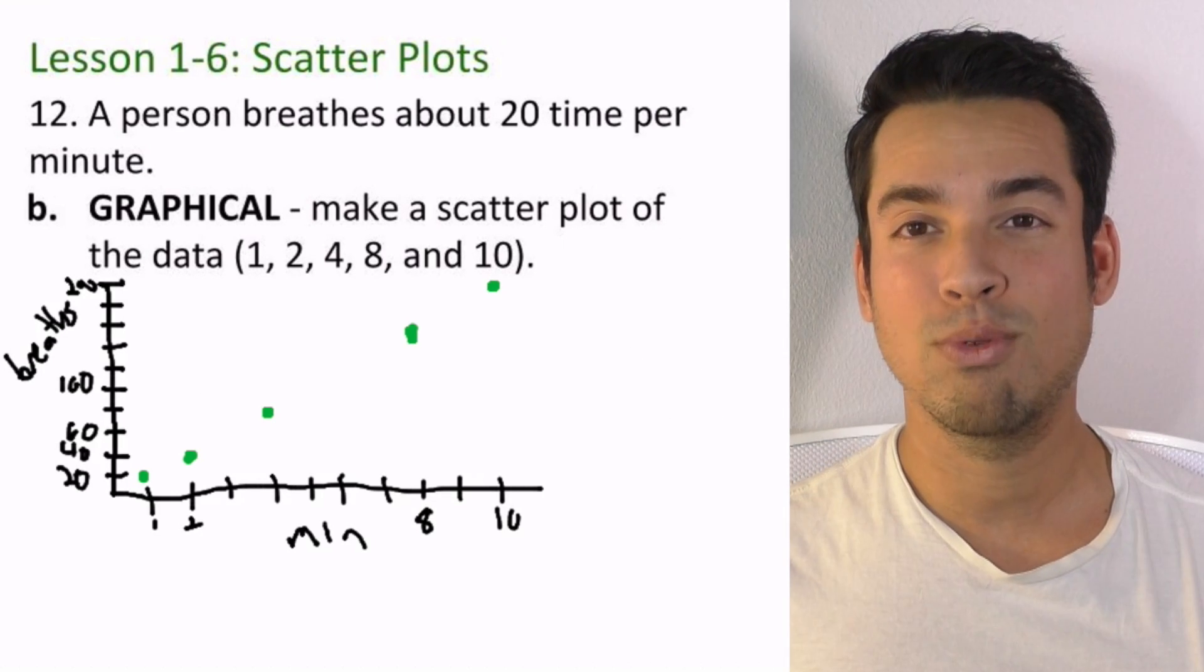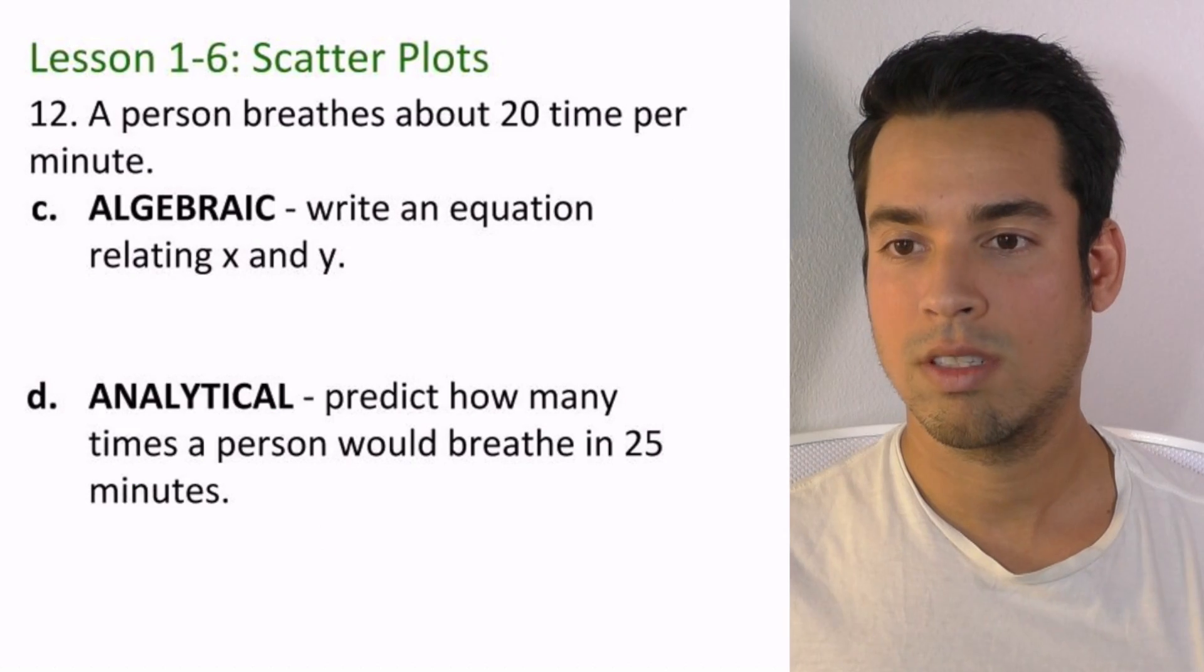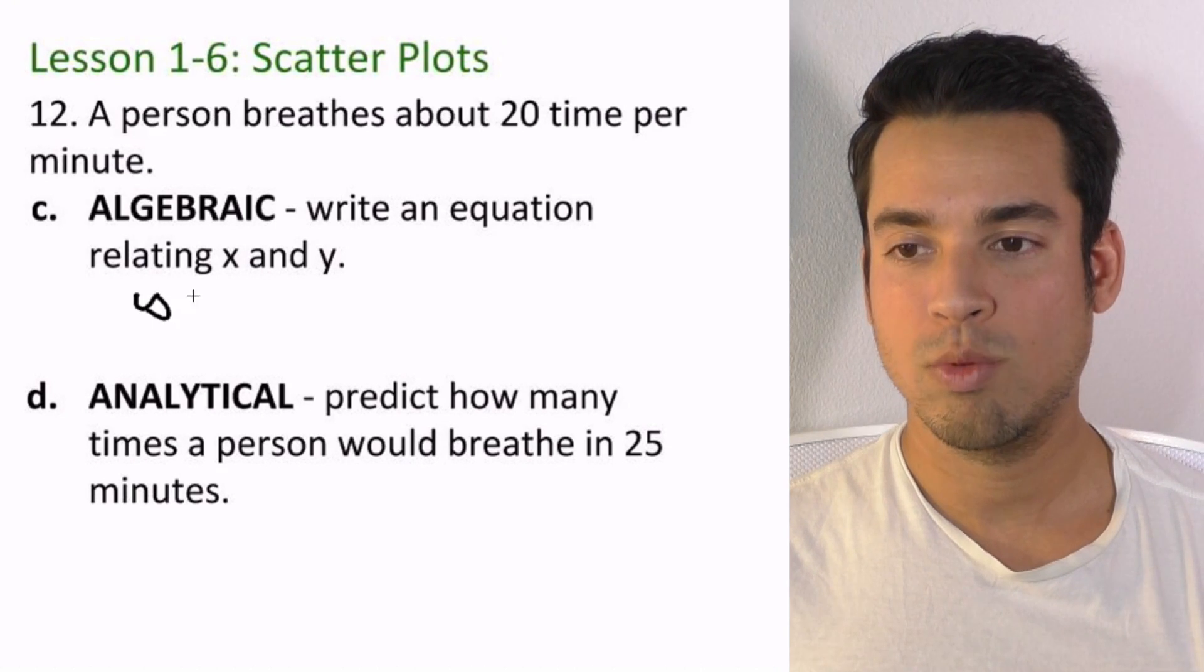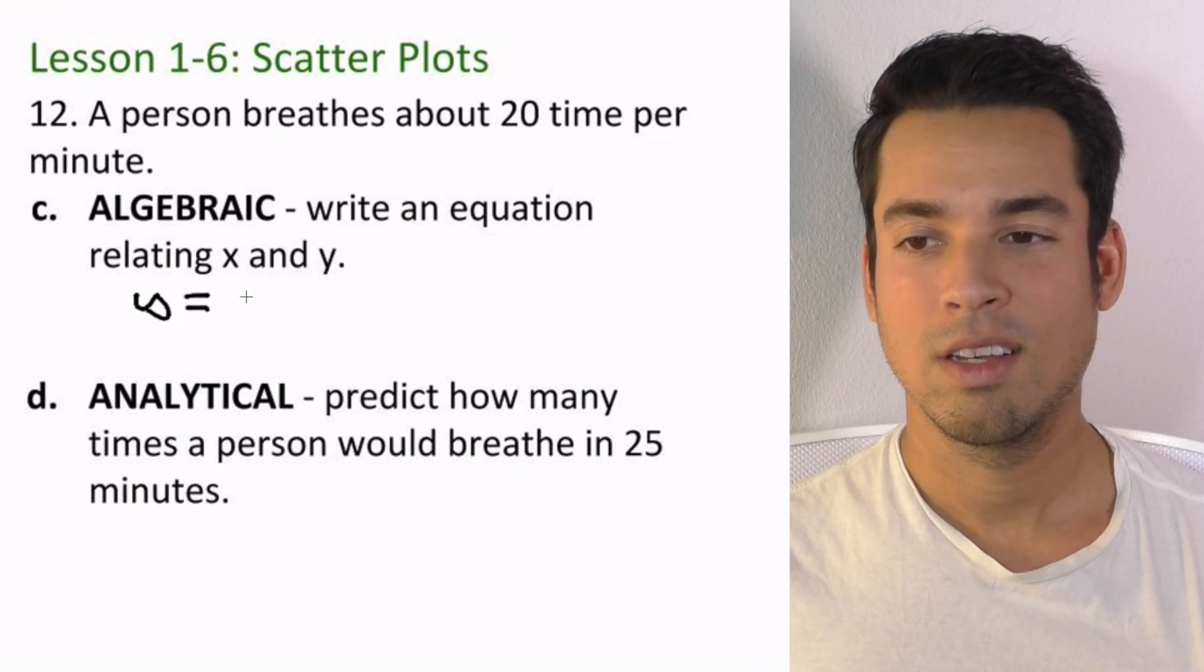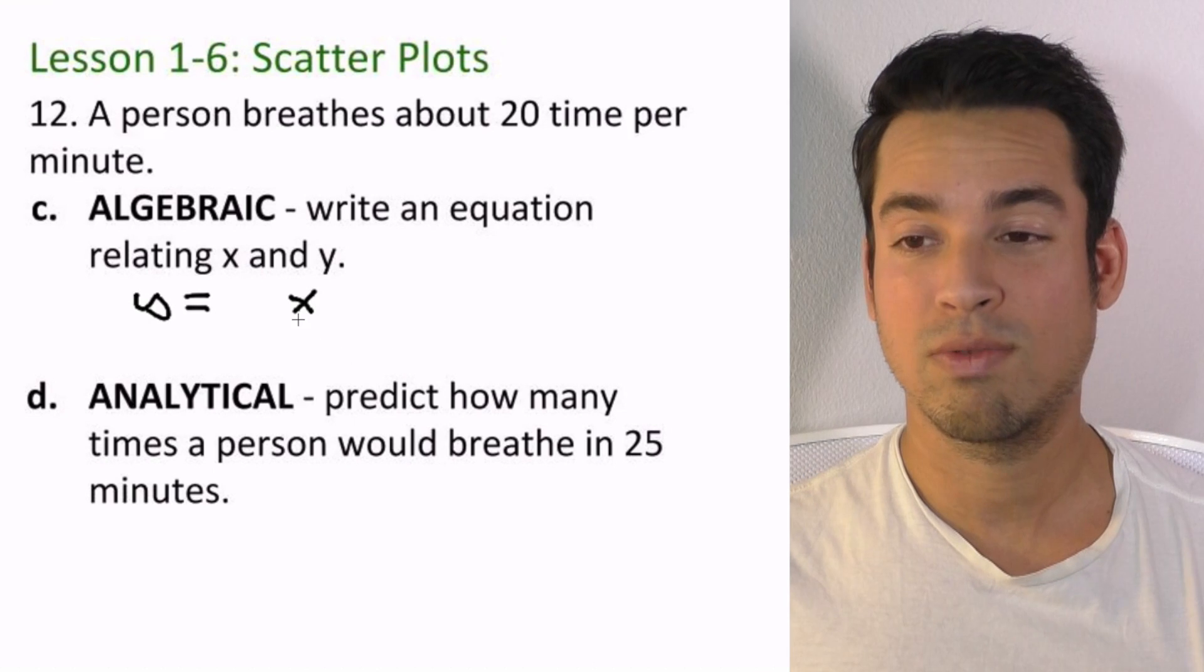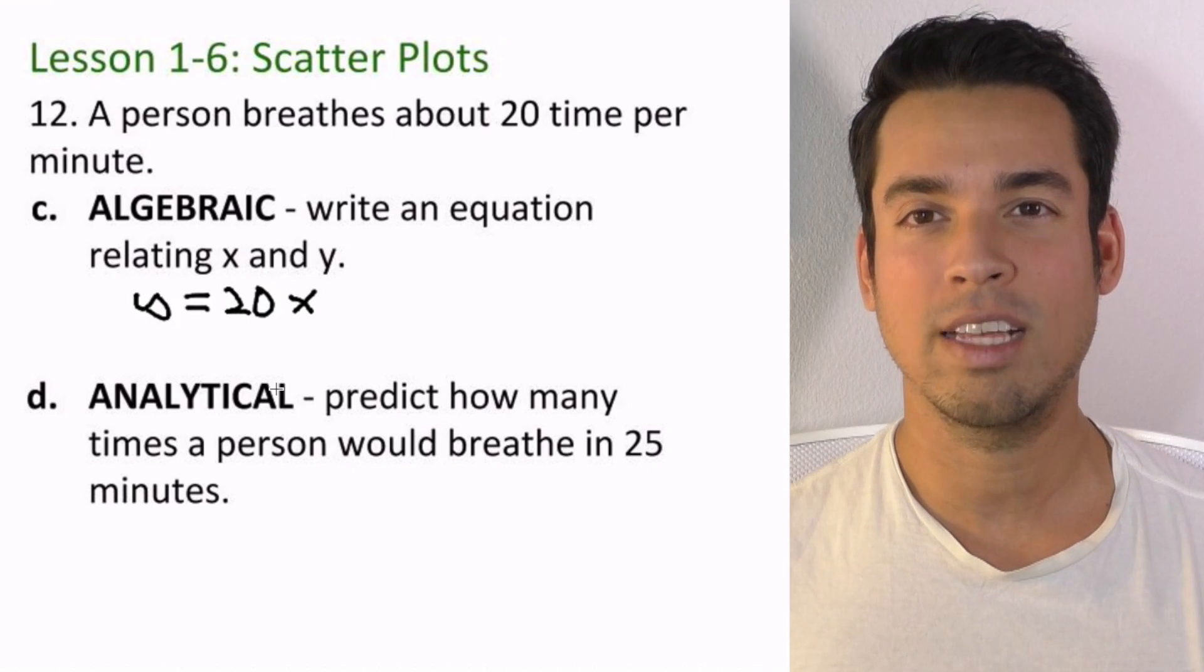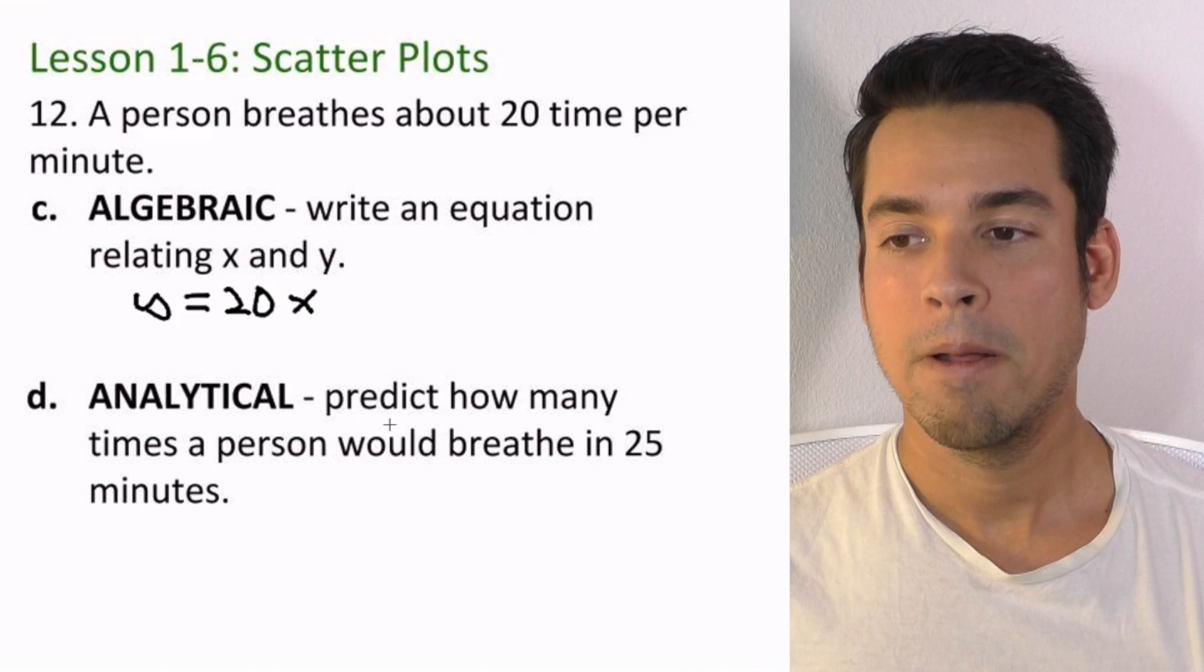Now let's go on to c and d. Write an equation relating x and y. Well again, y is the number of times we're breathing, x is the minutes. Well what have we been doing? We've been taking x - one minute it's 20 times, two minutes 40 times - and we're multiplying it by 20. That's the relationship, a function, an equation, just a relationship between two values: y equals 20 times x.